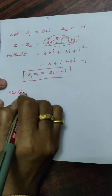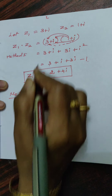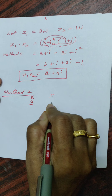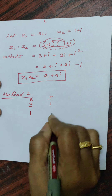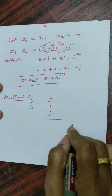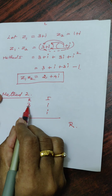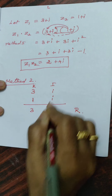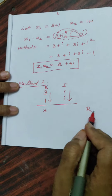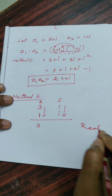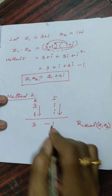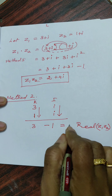Now I am going to represent Method 2. Let us take the real part 3 and imaginary part i here. Similarly, the second number has real part 1 and imaginary part i. To get the real part, multiply real by real: 3 into 1 is 3. Then multiply imaginary by imaginary: i into i is i squared, which is minus 1. So 3 minus 1 gives 2.